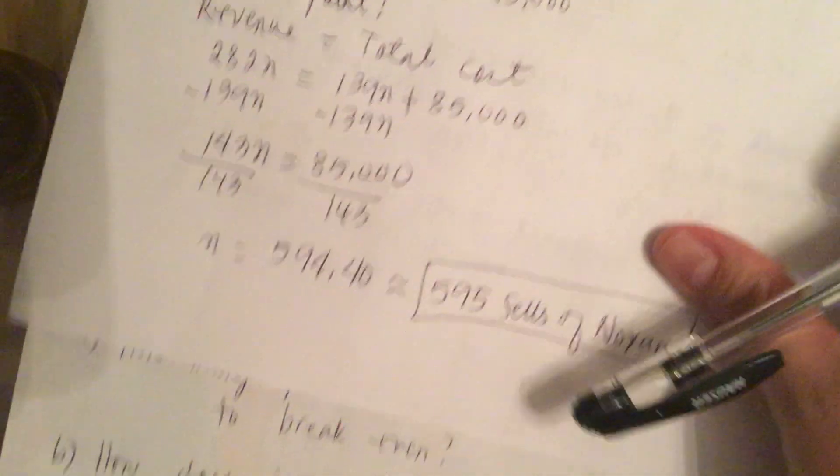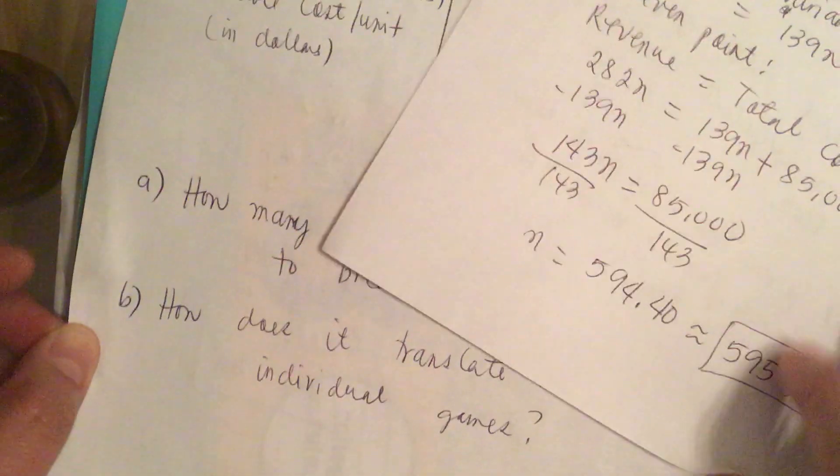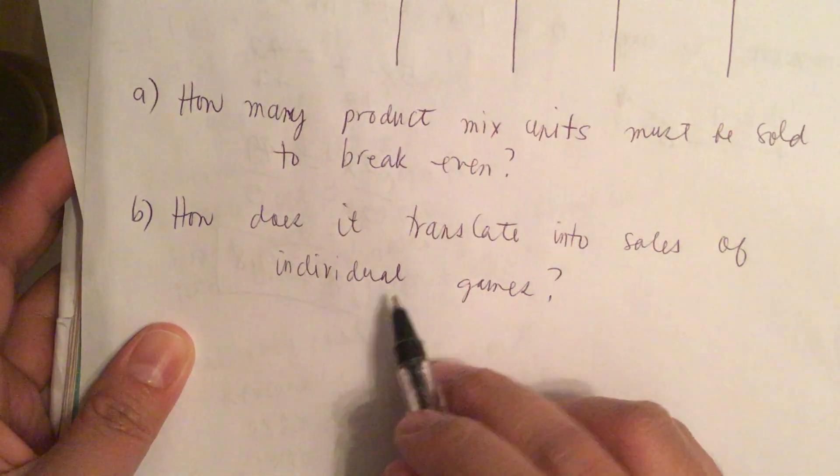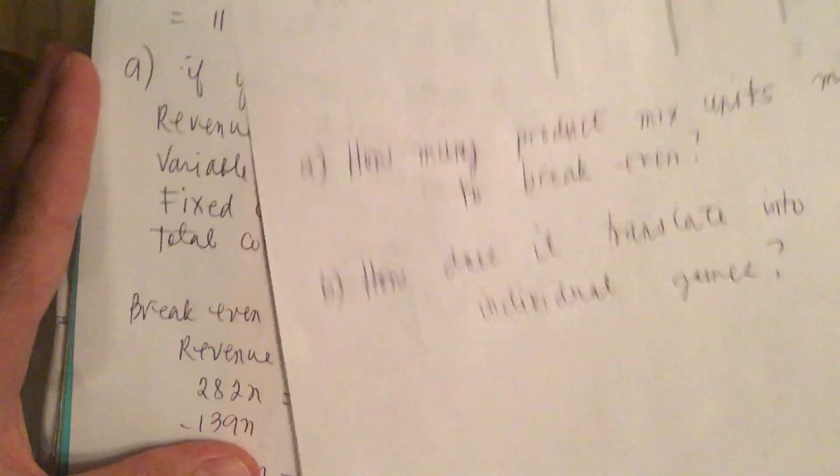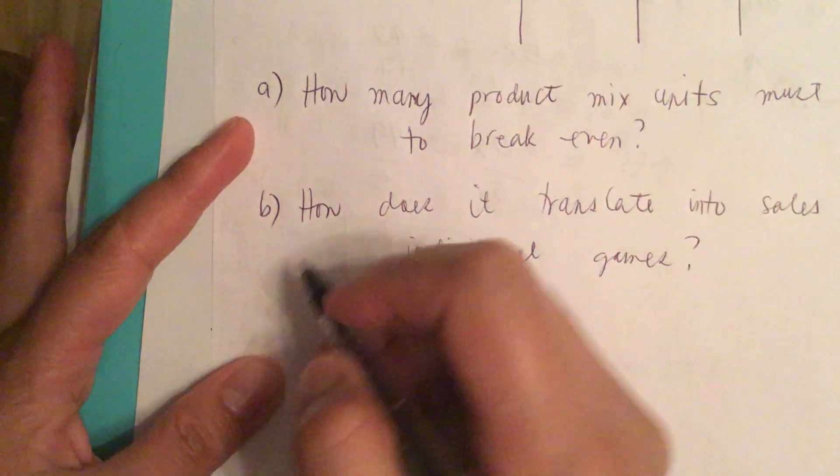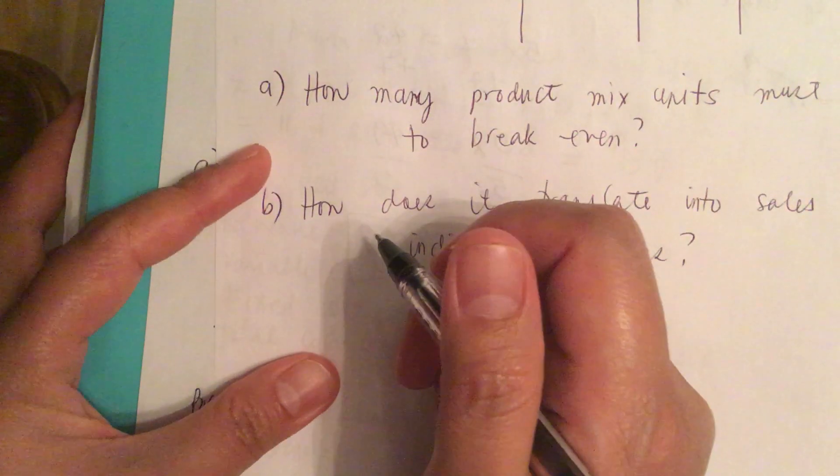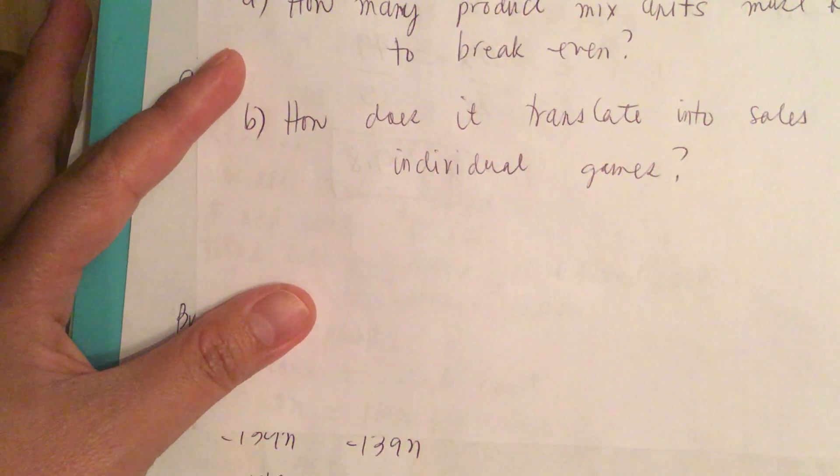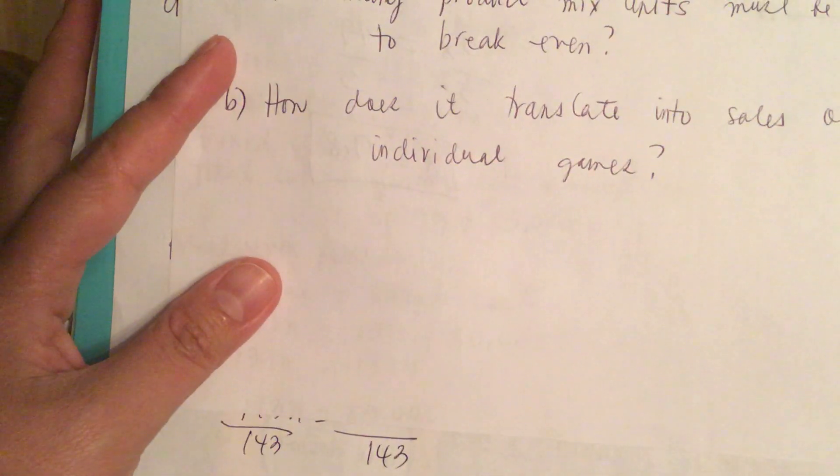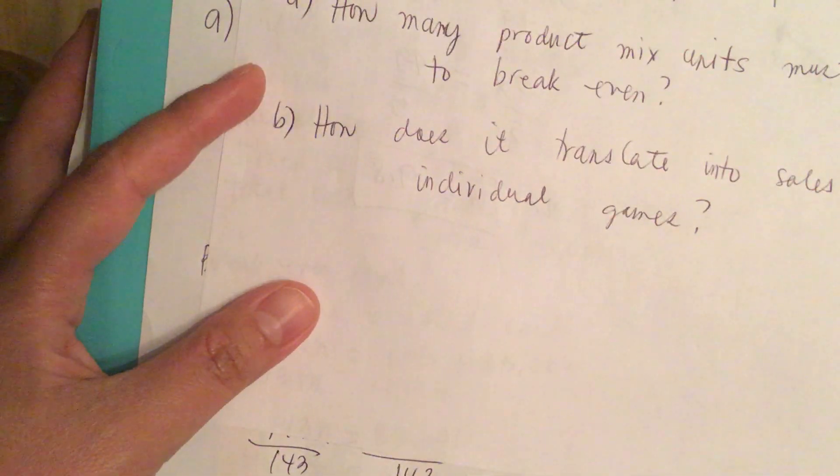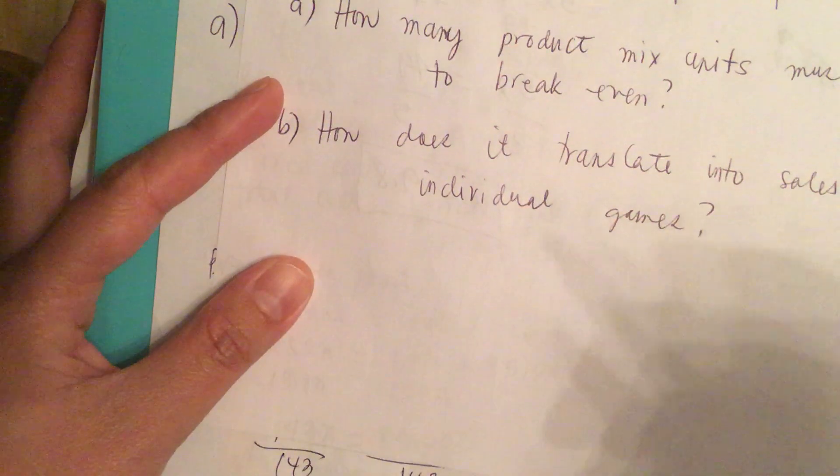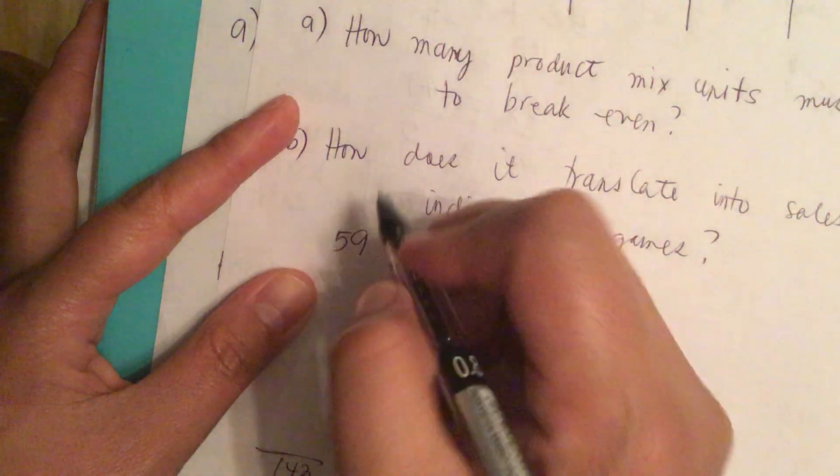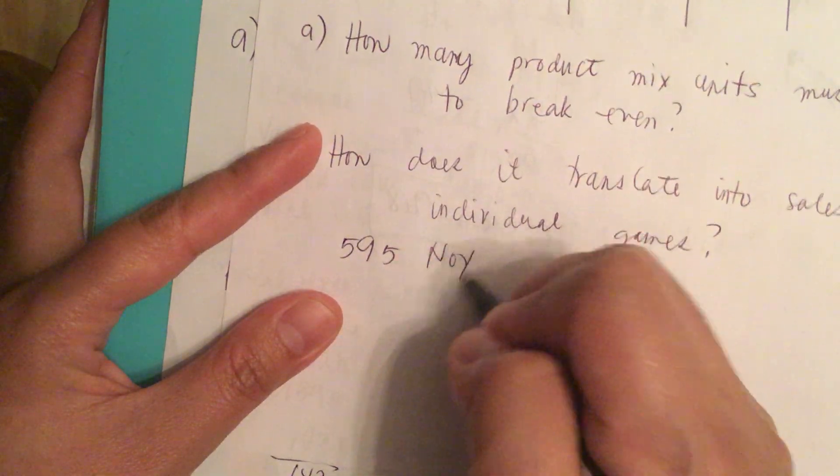Now for part B, how does it translate into sales of individual games? So let's answer this one. So 595 Noyan.